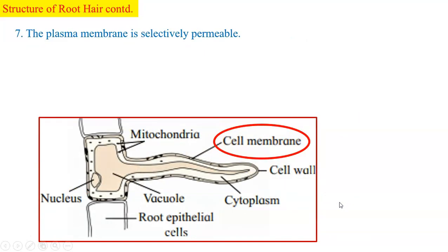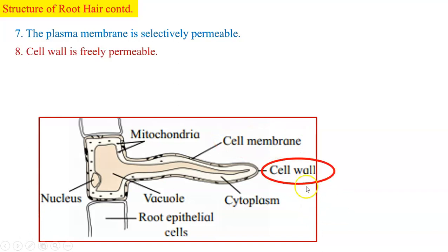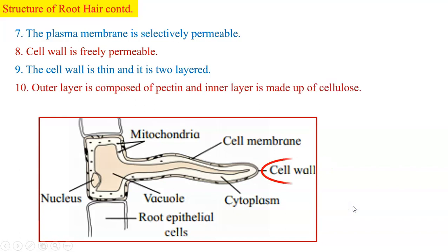The plasma membrane is selectively permeable. It allows the passage of only certain substances across it. Whereas the cell wall outer cell wall is freely permeable. The cell wall is thin and it is two layer. The outer layer is composed of pectin and inner layer is made up of cellulose.